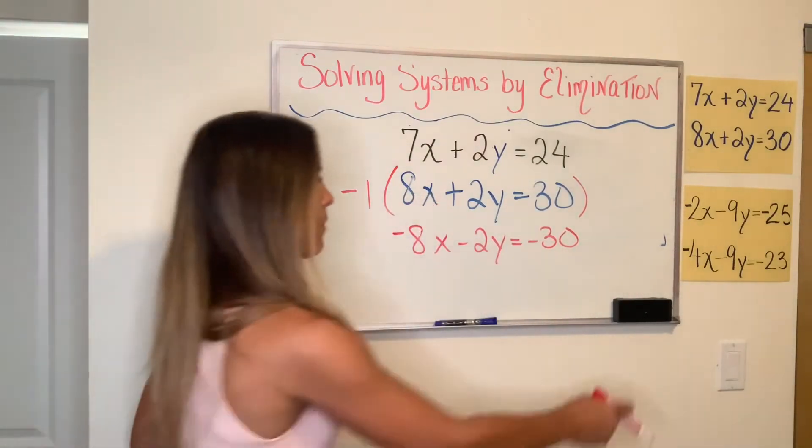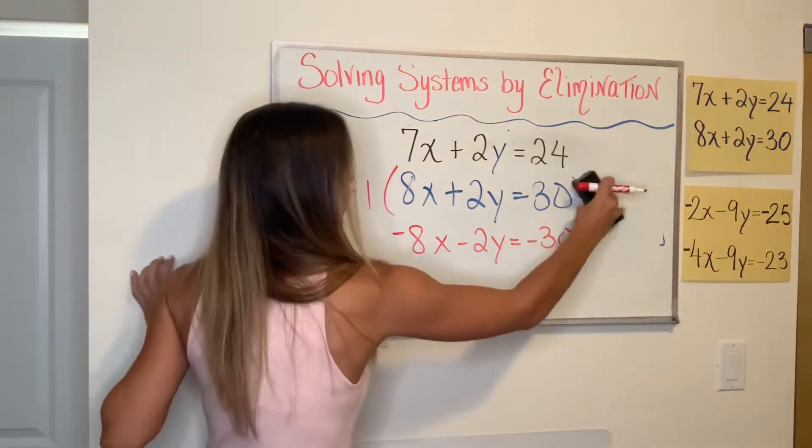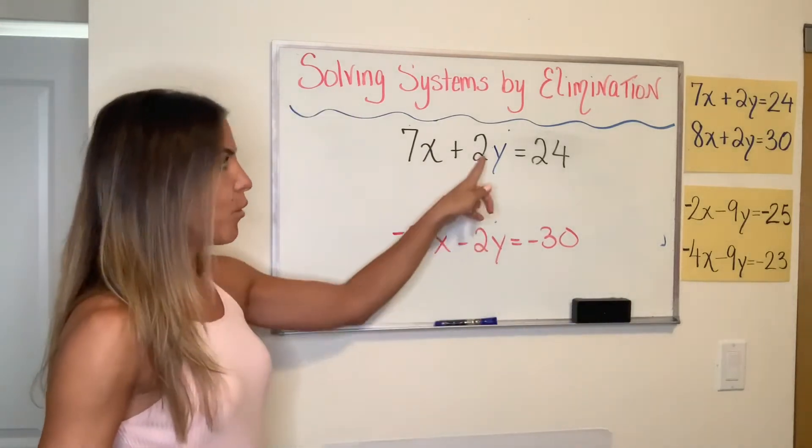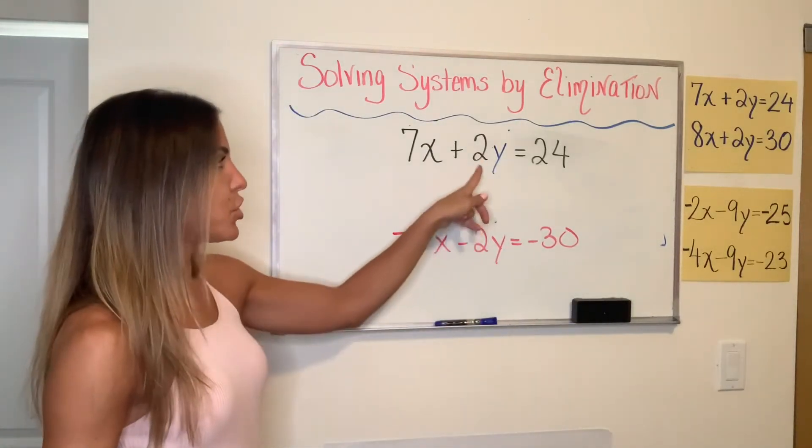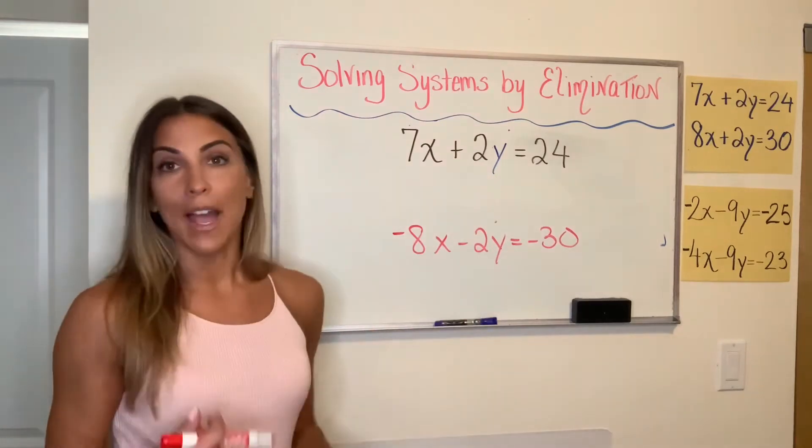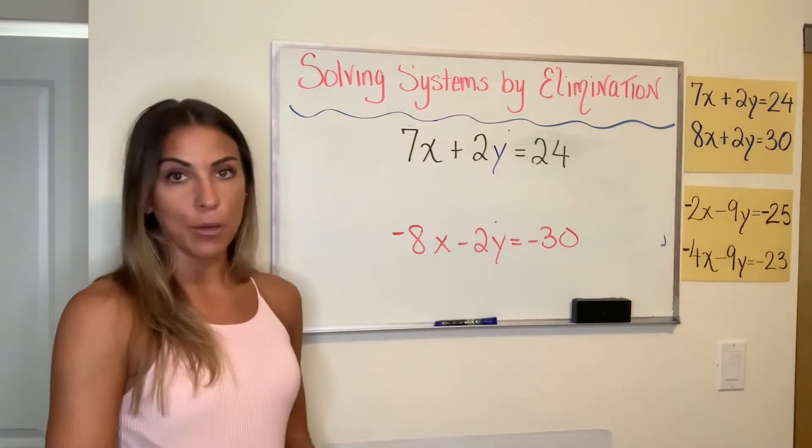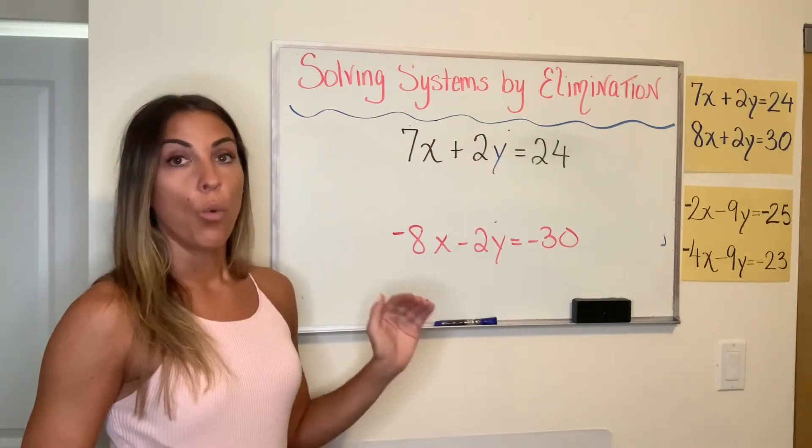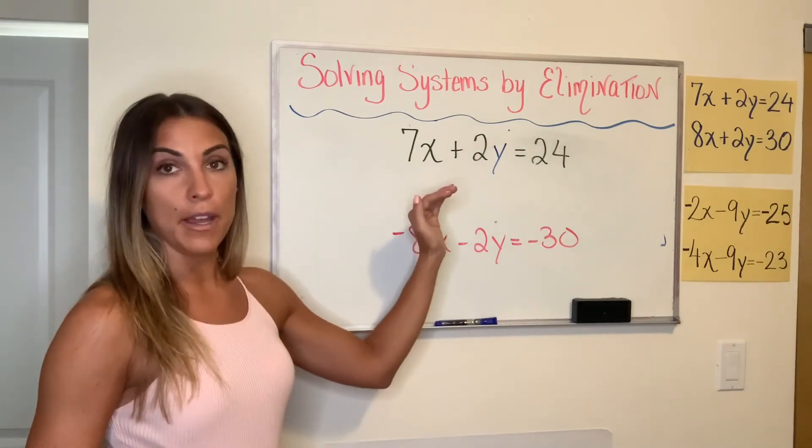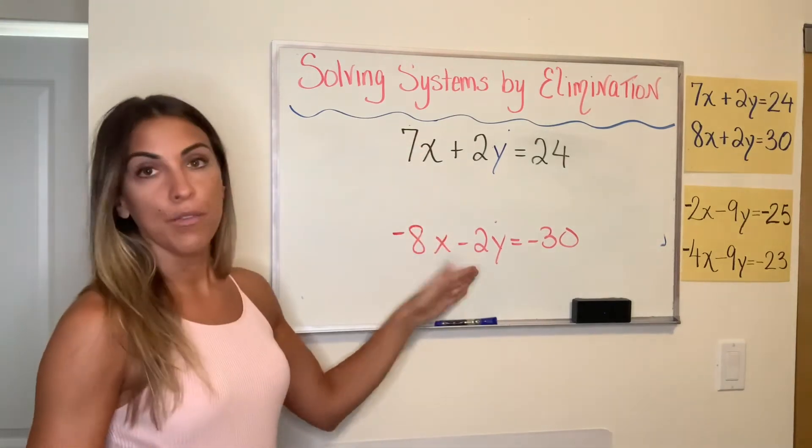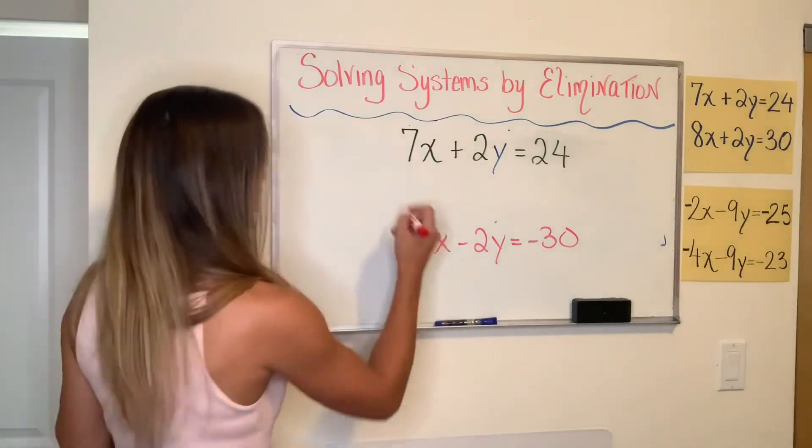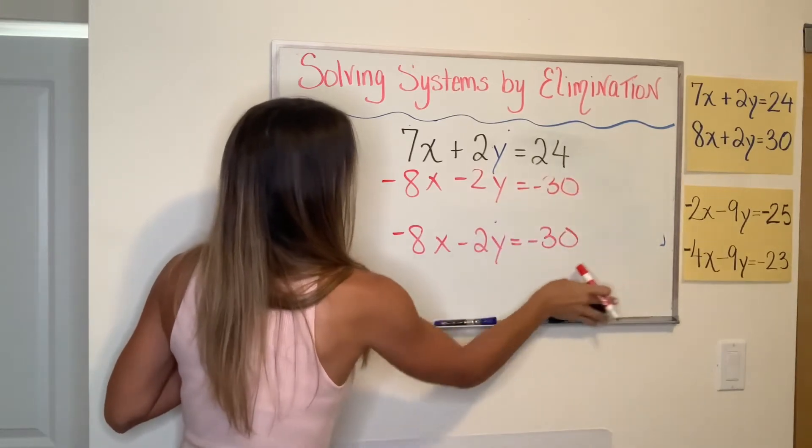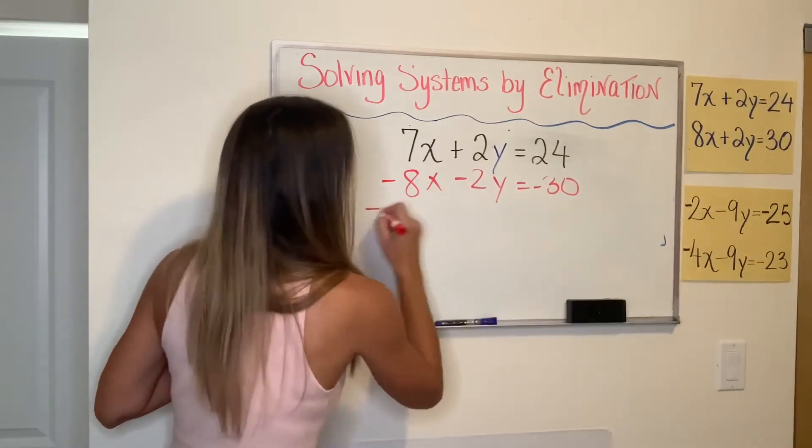So now I'm going to erase this middle equation. This is the new one that I'm working with. Now what I've achieved by multiplying by negative one is those opposite coefficients. So see, now I have a 2Y and a negative 2Y. So if you don't like the idea of subtracting the equations, now you can add. So to recap what we did, if you had two coefficients that were the same, what you can do is multiply either one of the equations by negative one, and that will make one of them the opposite. And now we can add them together. So now we're going to go through the addition process that you learned in the first video. So let's add these together.